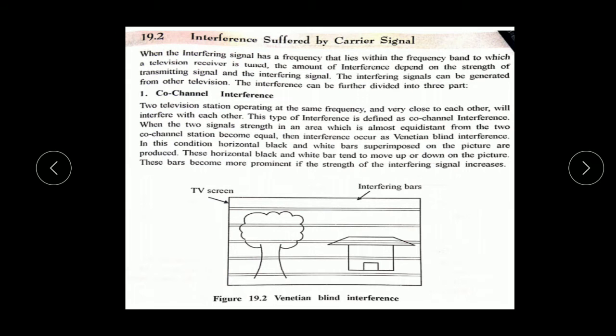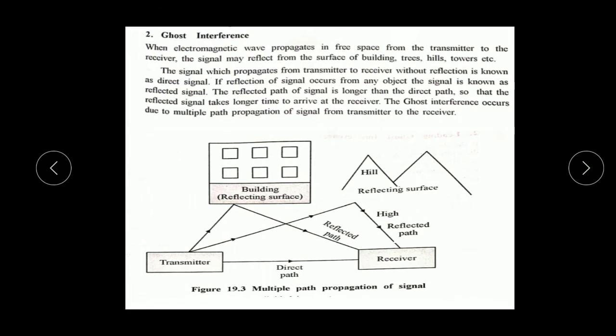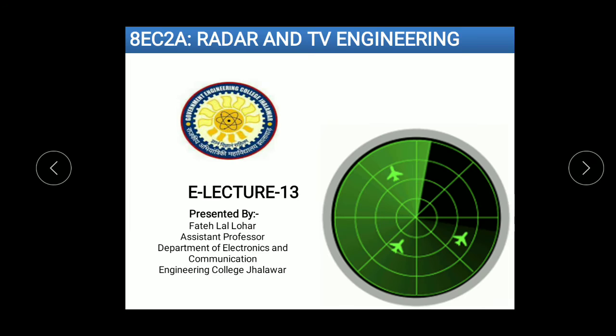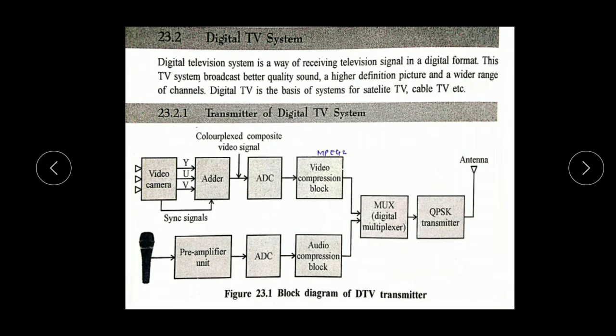We also discussed the interference caused by carrier signals. There are two types of interference: co-channel interference and ghost interference. In this lecture, we will basically discuss the digital TV system.